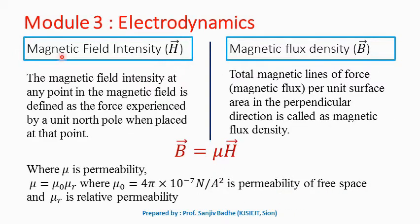The strength of the magnetic field is measured as magnetic field intensity, denoted by H̄. Magnetic field intensity at any point in the magnetic field is defined as the force experienced by a unit north pole when placed at that point. Just see the analogy: in electric field we define electric field intensity as the force experienced by a unit positive charge kept at that point, and magnetic field intensity is defined as the force experienced by a unit north pole when placed at that point.